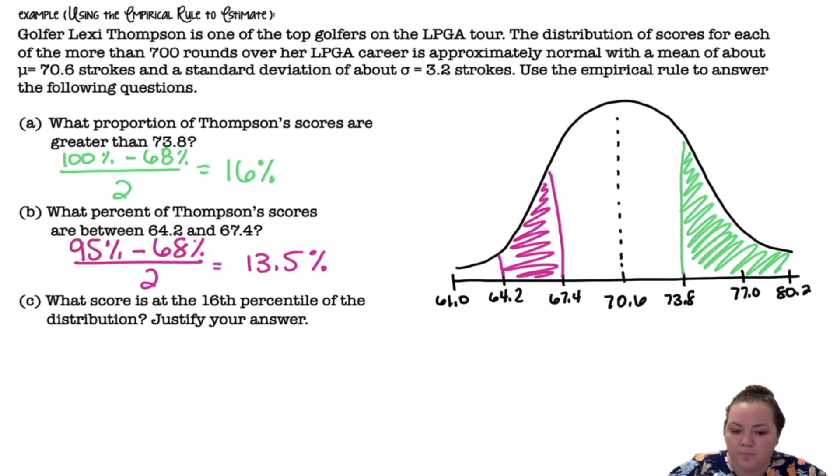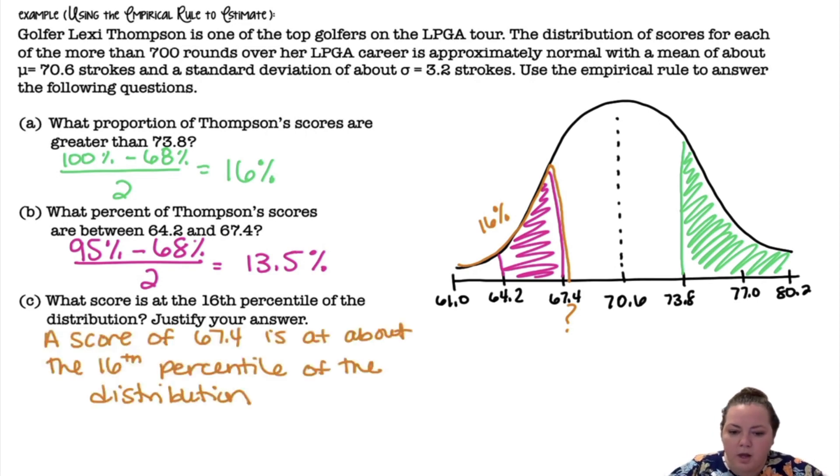What score is at the 16th percentile of the distribution? All right. So I'm going over. 16th percentile is the percent less than. So I'm going from the left over to where I have 16% and I want to know what that number is. All right. So a score of 67.4 is at about the 16th percentile of the distribution. So I did 0.15 plus 2.35 plus 13.5 and that gave me about 16. So that is where, and that was at the 67.4 strokes.